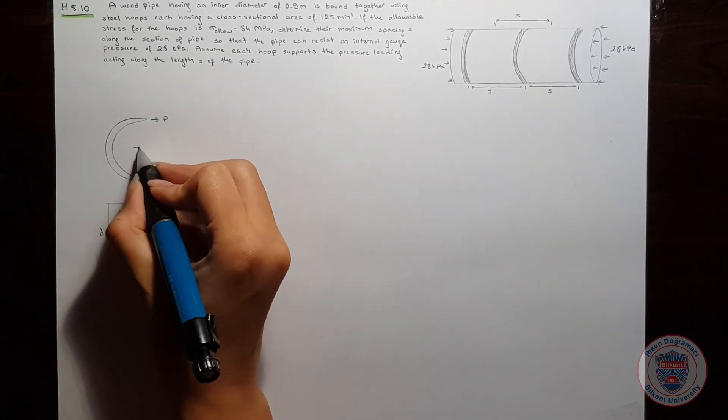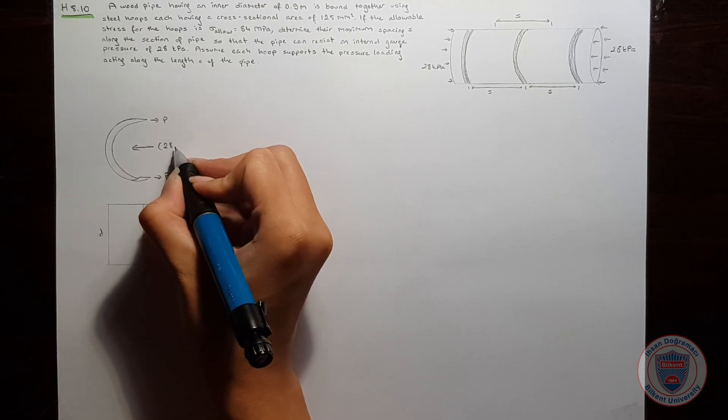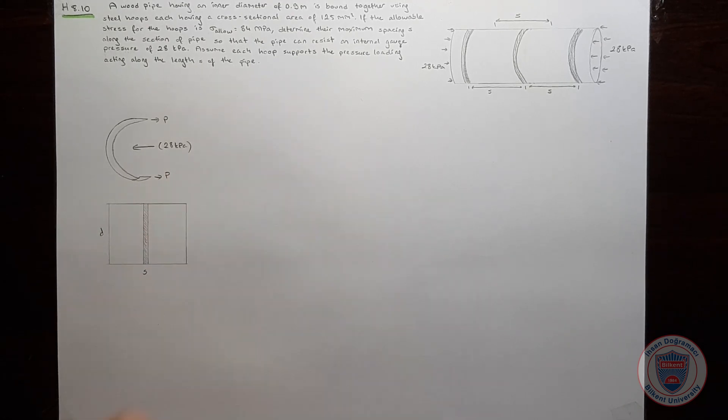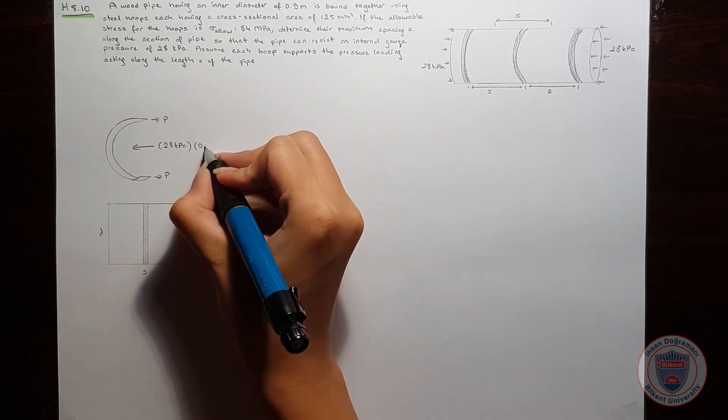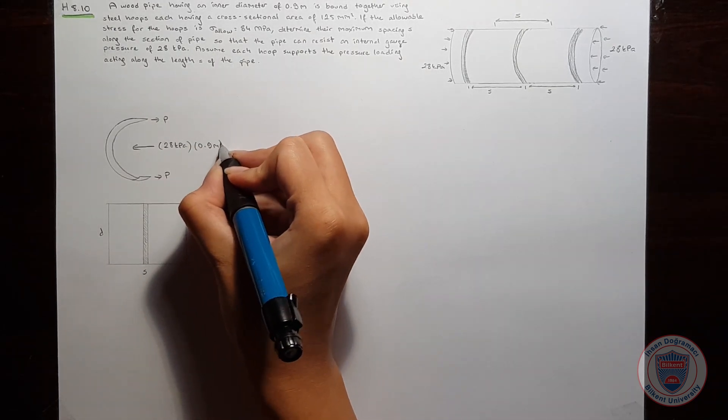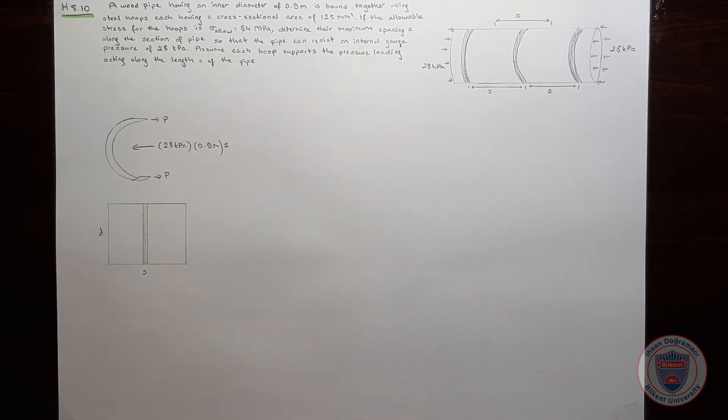So we can write it as 28 kPa times 0.9 meters, which is the diameter, and S. Let's write our equation.